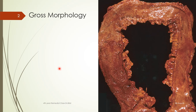Now, if somebody asks you why this is more likely to be a gross specimen of ulcerative colitis, you say it has affected the portion of bowel in a continuous manner. It is not like one portion is affected, then another portion is affected, and there's a clean area in between. That is how I say it is more likely to be ulcerative colitis than Crohn's.